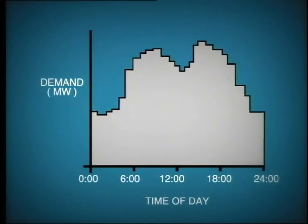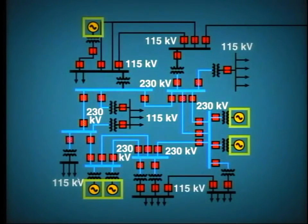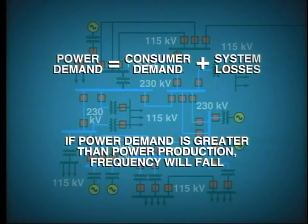The demand for megawatts varies throughout the day as consumers switch their electrical devices on or off. As we cannot store electrical energy, at least in large quantities, the combined power output of all generators connected to the system must exactly equal the total power demand at every instant of the day. The total power demand consists of the consumer's demand plus power system losses, which may be as high as 4 or 5 percent. If at any time the power demand is greater than power production, then the frequency will fall.